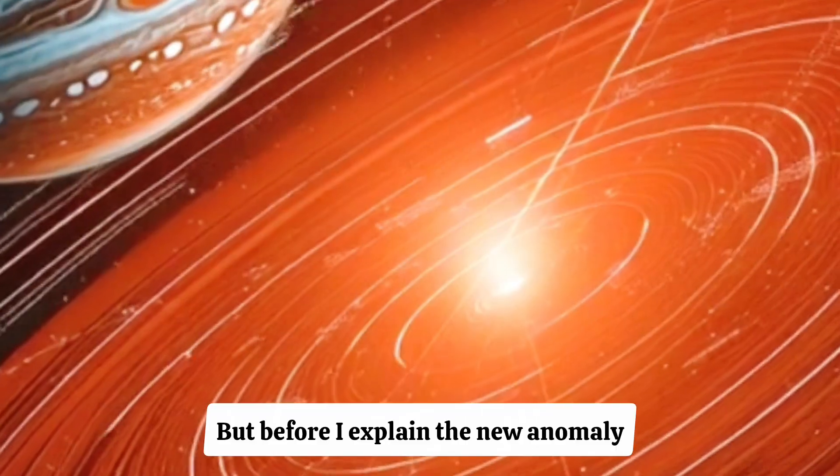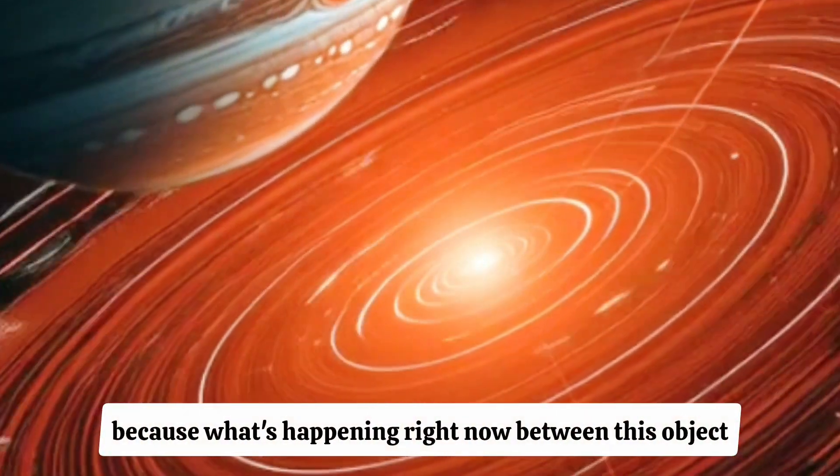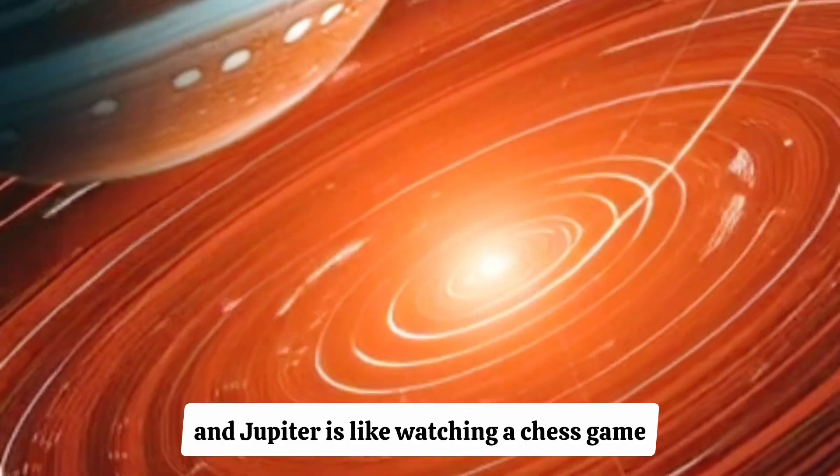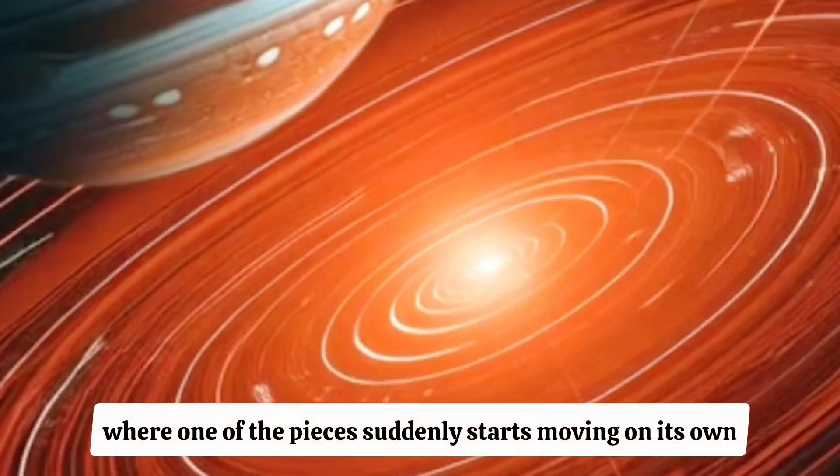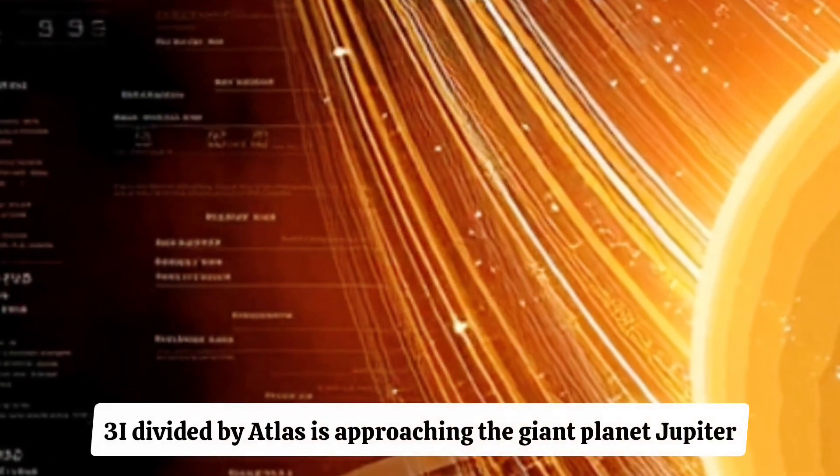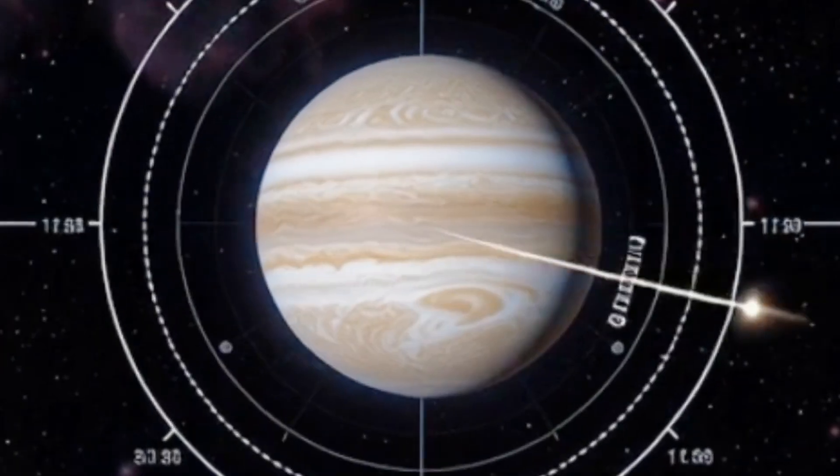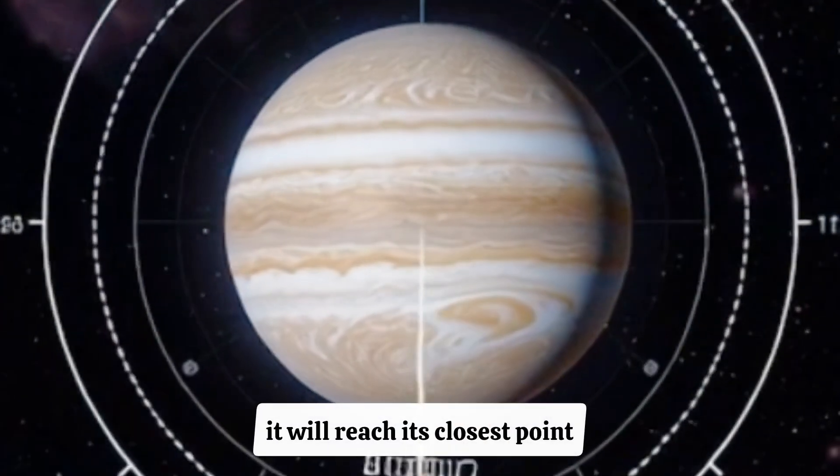But before I explain the new anomaly, you need to understand the setup, because what's happening right now between this object and Jupiter is like watching a chess game where one of the pieces suddenly starts moving on its own. Here's the situation. As of this week, 3i divided by Atlas is approaching the giant planet Jupiter, and on March 16, 2026, it will reach its closest point. That's less than four months from today.